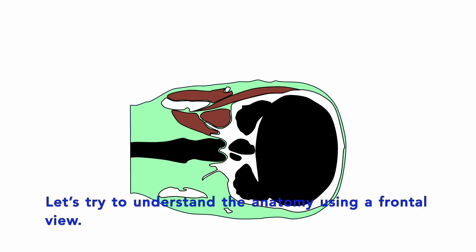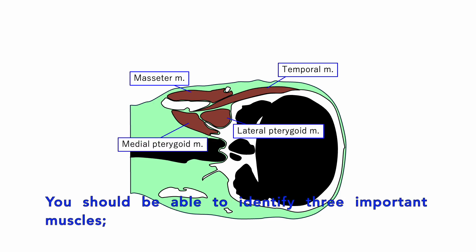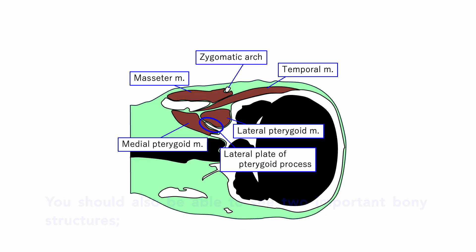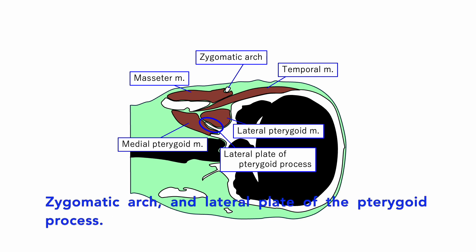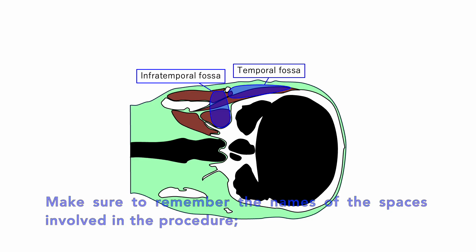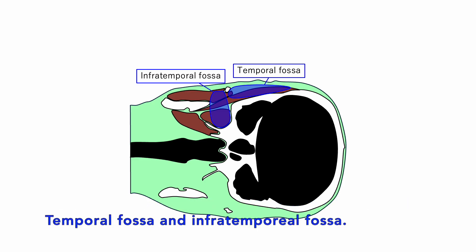Next, let's understand the anatomy using a frontal view. You should be able to identify three important muscle layers: masseter, temporal, and lateral pterygoid muscles. You should also be able to see two important bony structures: the zygomatic arch and the lateral plate of the pterygoid process. Make sure to remember the names of the spaces involved in the procedure — the temporal fossa and infratemporal fossa.